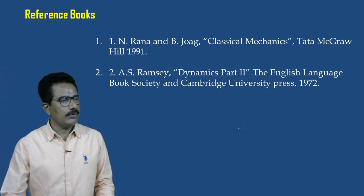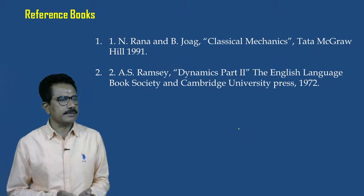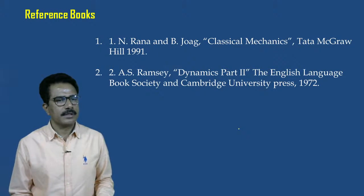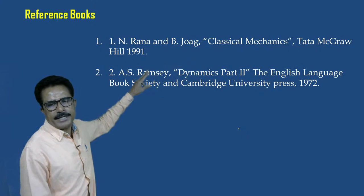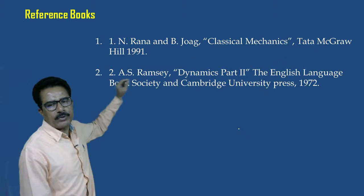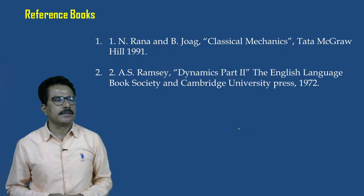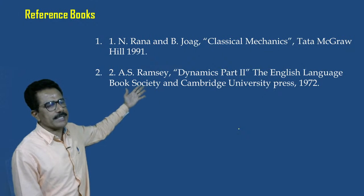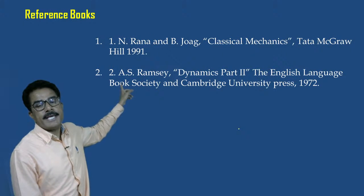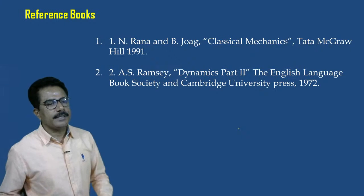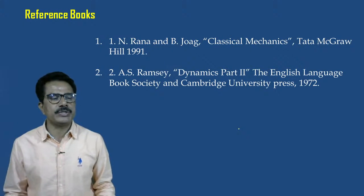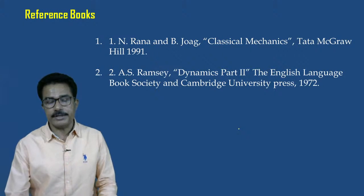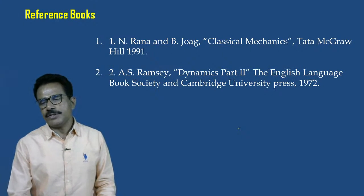Units 3 and 4 are prepared from Gelfand and Fomin's Calculus of Variations. Reference books include: Rana and Joag, Classical Mechanics, Tata McGraw-Hill; and Classical Dynamics Part 2 by A.S. Ramsey, Cambridge University Press, 1972.